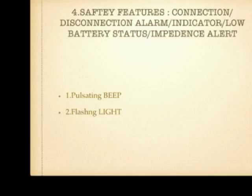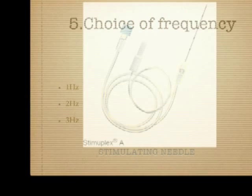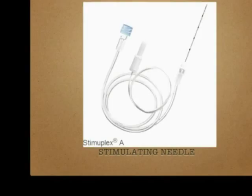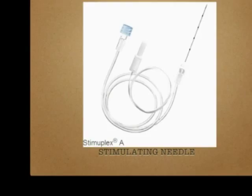There should be safety features such as a connection/disconnection alarm, low battery status alarm, and an impedance alarm, which may appear as a beep sound or flashing light. You should have the ability to choose the frequency from 1 Hz to 2 Hz. The stimulating needle shaft is fully coated and insulated except at the tip, where electrical pulses are discharged. Needles come in sizes of 2.5 cm, 5 cm, 10 cm, and 15 cm with centimeter markings. The extension tube should be clear and transparent so that blood can be detected early if the needle is over a blood vessel.